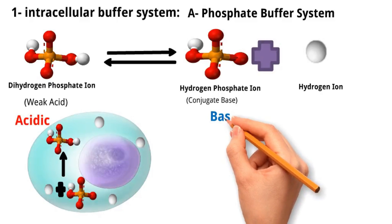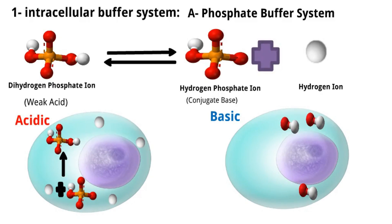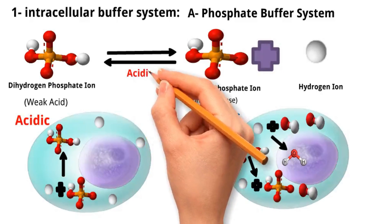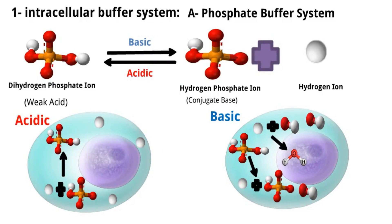In basic conditions, where there is an excess of hydroxide ions that can react with hydrogen ions, this reaction results in the removal of hydrogen ions from the system. As you know, in reversible reactions the system tends to compensate by restoring the hydrogen ions. To do so, the dihydrogen phosphate ion dissociates into phosphate ion and hydrogen ion. The intracellular phosphate buffer system thus provides a dynamic mechanism for cells to resist changes in pH.